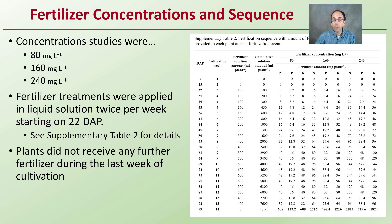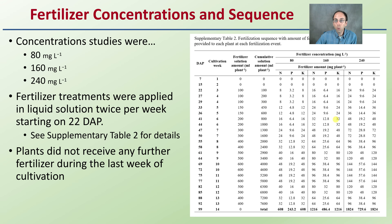Looking at fertilizer concentrations and the general sequence: concentrations were 80, 160, and 240 milligrams per liter. Fertilizer treatments were applied in liquid solution twice per week starting at day 22. Plants did not receive any further fertilization during the last week of cultivation.